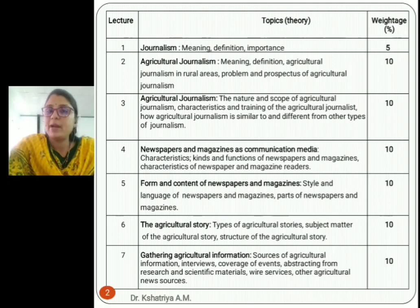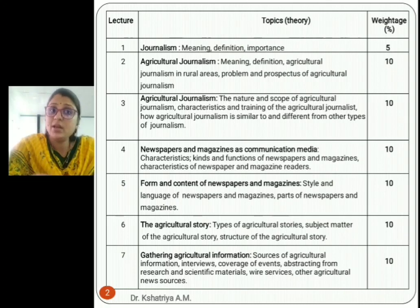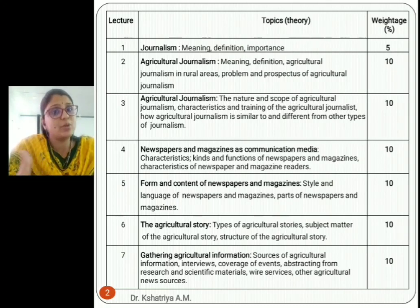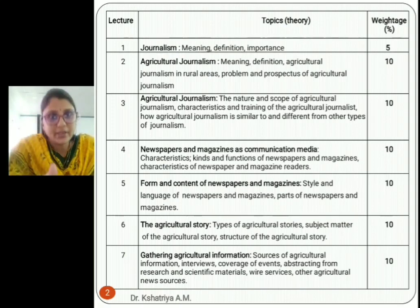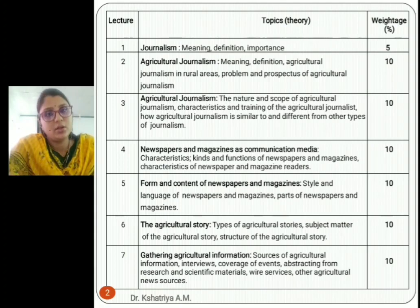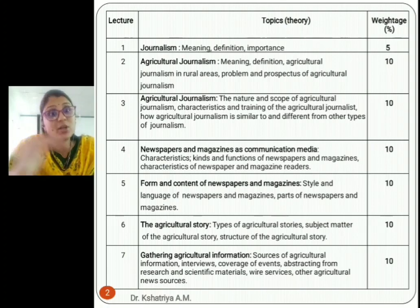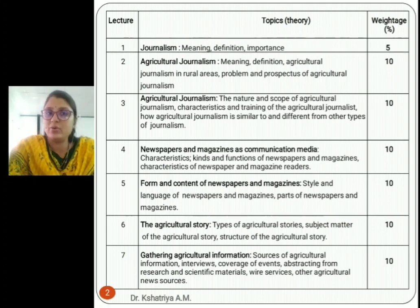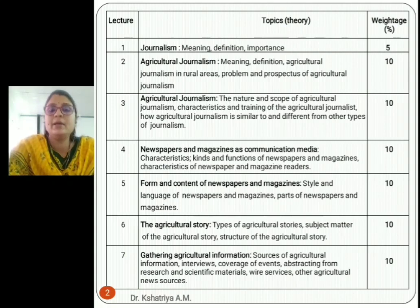Topic five is Form and Content of Newspaper and Magazine. In the previous topic we discussed what newspapers and magazines are, but here we discuss how you are going to write a particular agriculture story or news story — the style and language, and the different parts of the newspaper and magazine. It is about ten marks.